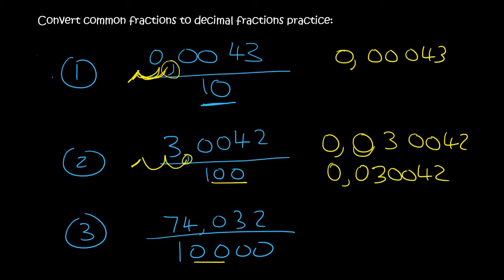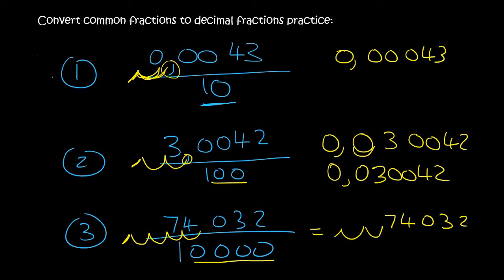Then the last one: we have four zeros, so we're going to move it four places: 1, 2, 3, 4. Remember to put your comma down. We end up with two empty spaces, then 74032. Inside those empty spaces put a zero. And then if there's nothing in front of the decimal, put a zero. So the answer is 0.0074032. Thanks for watching this lesson.